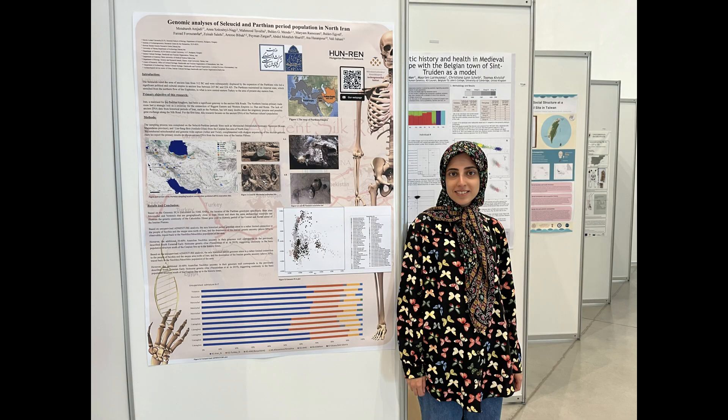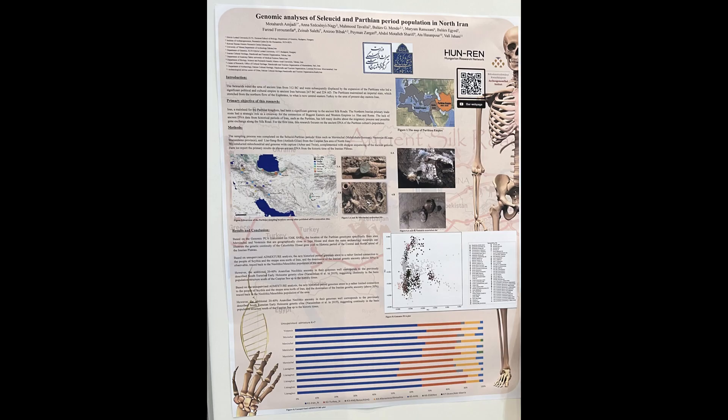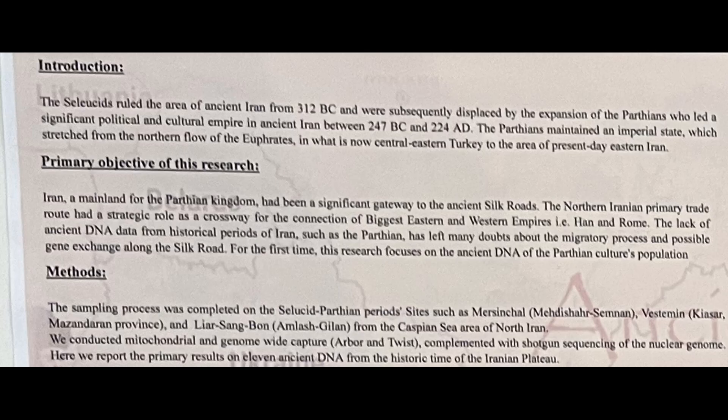Here is the poster in question and I'll zoom in to give you a better understanding of the details. Here is a zoomed-in version of the poster, and you can see it's a very in-depth exploration of the findings with a PCA and an admixture panel. Here is the introduction as well as the primary objective and methods — the gist is that they found samples from the Seleucid and Parthian eras from northern Iran, which will be used to determine the ancestral origins of Parthian-era Iranians from the north.